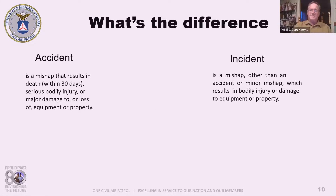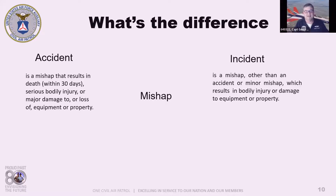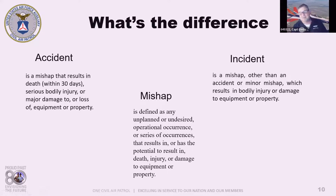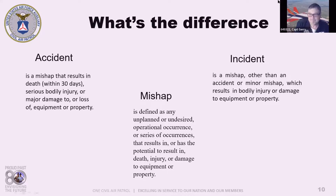A mishap is defined by the regulation as any unplanned or undesired operational occurrence or series of occurrences that results in — or has the potential to result in — death, injury, or damage to equipment or property. We don't care if it's major or minor: if it happened, it's a mishap. Even a cut finger or a stubbed toe is still a mishap.